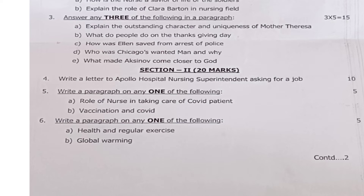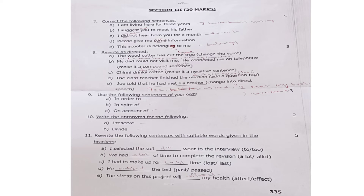Question 6: Write a paragraph on any one of the following — 6a: Health and regular exercise, or 6b: Global warming. This also carries 5 marks. Moving on to Section 3, which is for 20 marks — this is the grammar part.